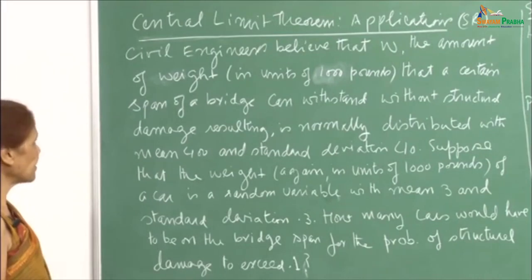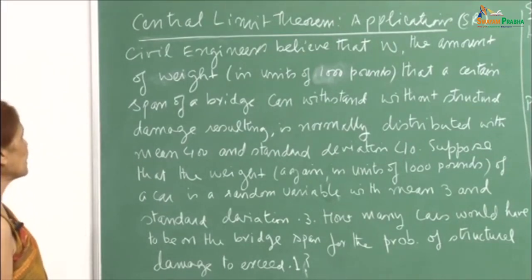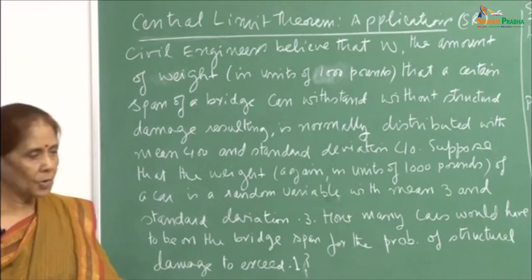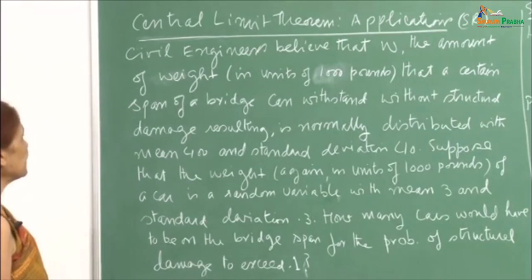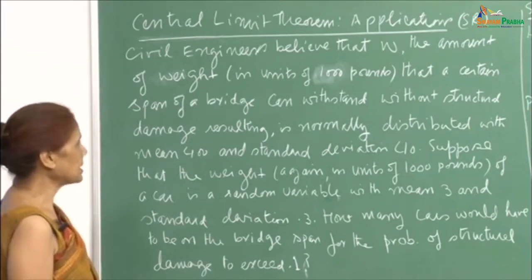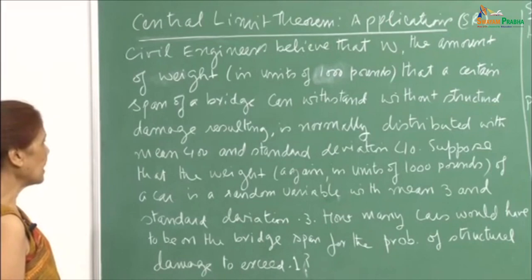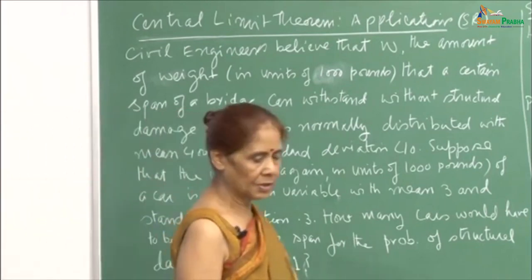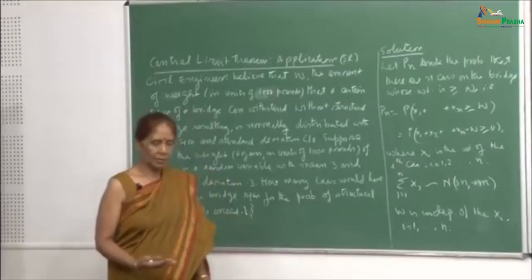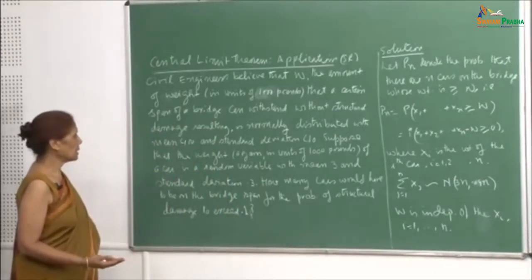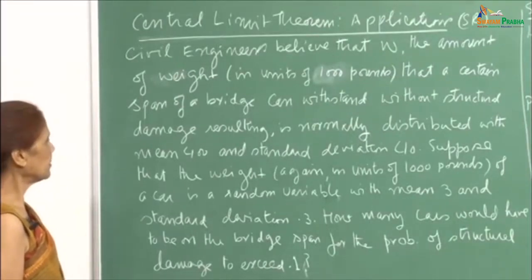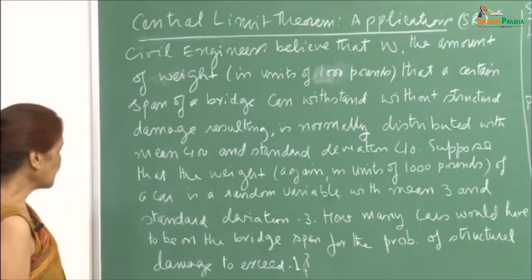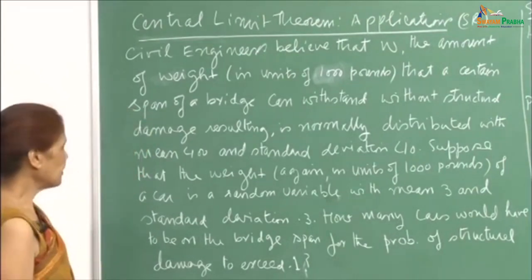I will continue with the central limit theorem and its applications. This example I have taken from Sheldon Ross's book on probability theory. The idea here is that civil engineers believe that W, the amount of weight in units of 1000 pounds that a certain span of a bridge can withstand without structural damage, is normally distributed with mean 400 and standard deviation 40.